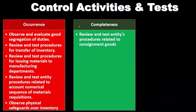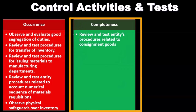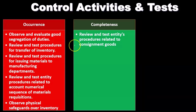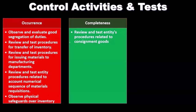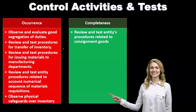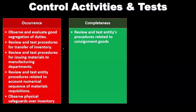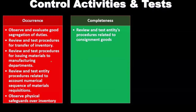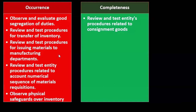With the assertion of completeness, we review and test entity procedures related to consignment goods. When thinking about inventory completeness, we consider consignment because the entity physically holding the inventory isn't actually the owner. One company provides the inventory to another while still owning it; the second company facilitates the sale and then remits a portion back to the original owner. With regards to completeness, we want to consider the proper allocation of inventory to the records.